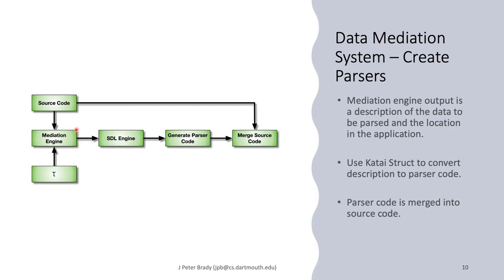So our output from the mediation engine is a description of the data to be parsed and its location in the application. So the location of where we're going to enter the parsing statements. We use a system descriptor language to send to the engine which is being run by Kaitai Struct which can convert description to parser code. One nice thing about Kaitai is it's cognizant of many different languages. So if the source code is C or Java etc we can generate parser code in the appropriate language. And from that point we can use the data that we've collected to merge that into the source code to create the final code.